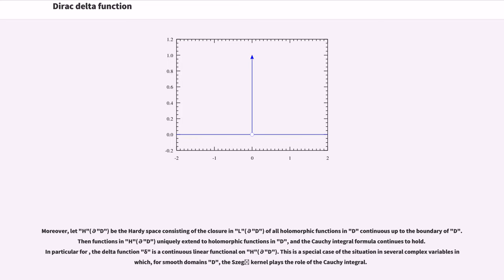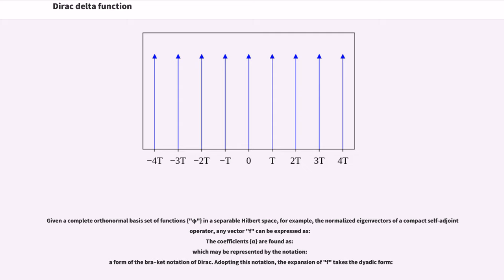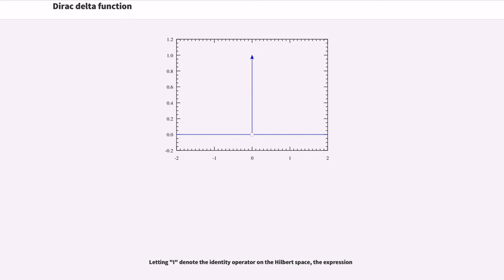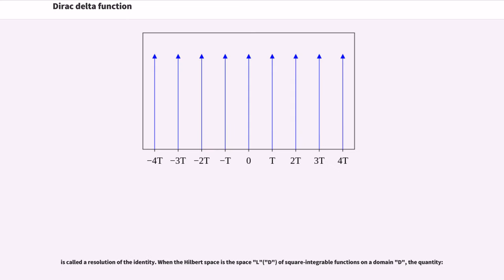Given a complete orthonormal basis set of functions φ in a separable Hilbert space — for example, the normalized eigenvectors of a compact self-adjoint operator — any vector f can be expressed with coefficients α found via inner products, which may be represented using Dirac's bra-ket notation. Adopting this notation, the expansion of f takes the dyadic form. Letting I denote the identity operator on the Hilbert space, the expression is called a resolution of the identity.